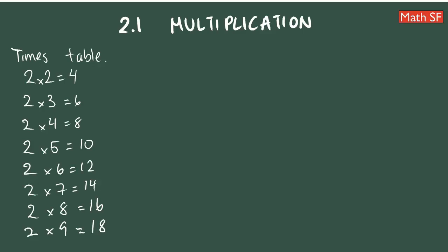For the times table of 2, here is the list: 2 times 2 through 2 times 9. Now let's move on to the times table of 3.